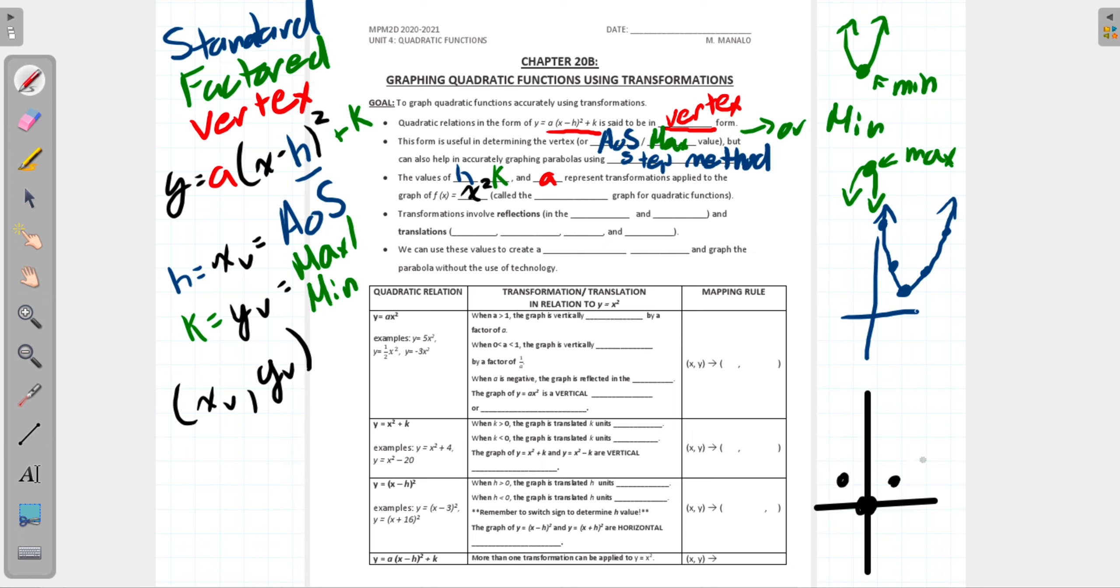It goes up using the same method: over one, up one, over two, up four, over three, up nine. That's the form of y equals x². Let's bring that up. We're usually referring to y equals x². This is the most common form, or the base form of a quadratic. I'll duplicate it and make a table so you can see the major points too. This is what we're talking about: over one, up one, and your origin is where the vertex is.